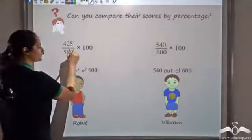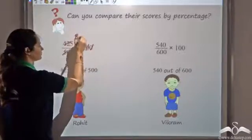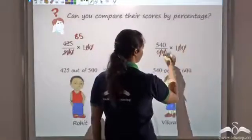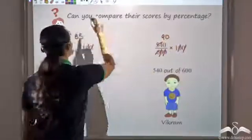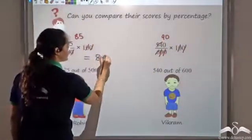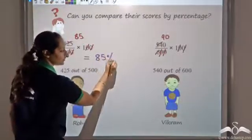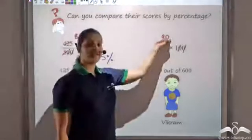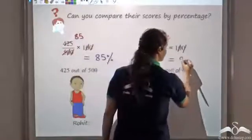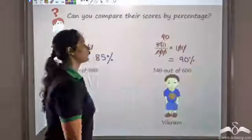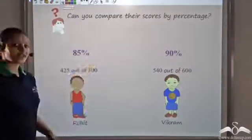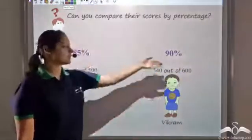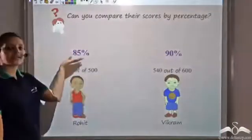Now I can simplify both. For Rohit, I get 85 per 100, so I write 85 percent. For Vikram, he is getting 90 per 100, that is 90 percent. So when I compare their scores by percentage, Rohit is getting 85 percent and Vikram is getting 90 percent. We can clearly see that Vikram is scoring more — 90 percent versus 85 percent.